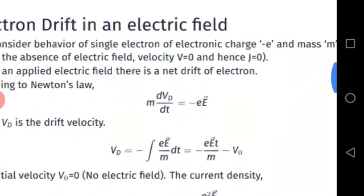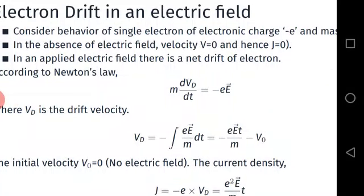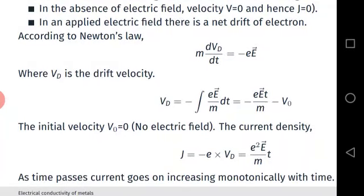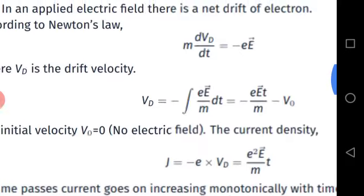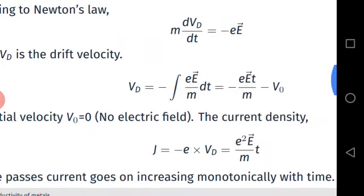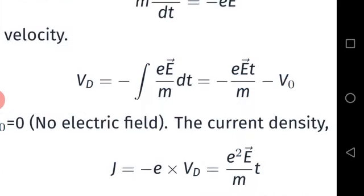Now consider the application of an electric field E, so there is a drift of electrons. Initially electrons had random motion, but on application of the electric field there is directionality — the electrons drift in the direction opposite to the field. According to Newton's law: m times dv_d/dt equals charge times electric field. Integrating, we get the drift velocity v_d equals minus eEt/m.